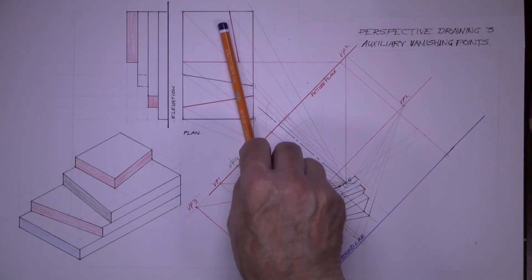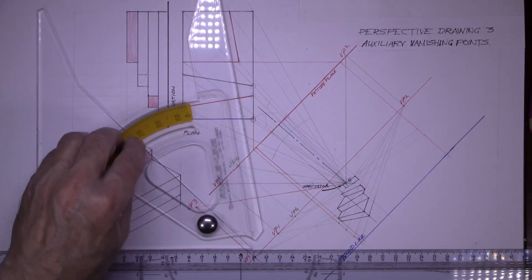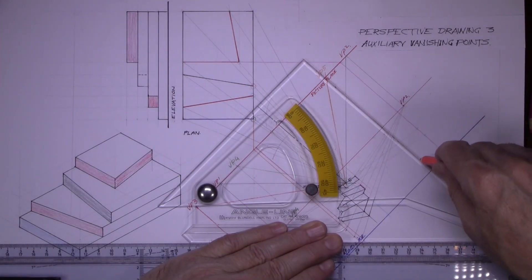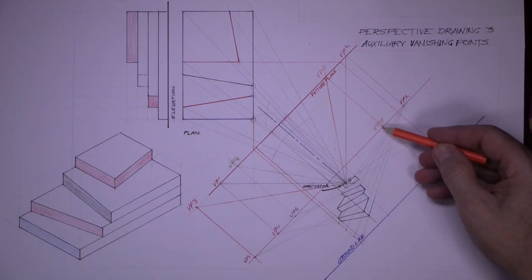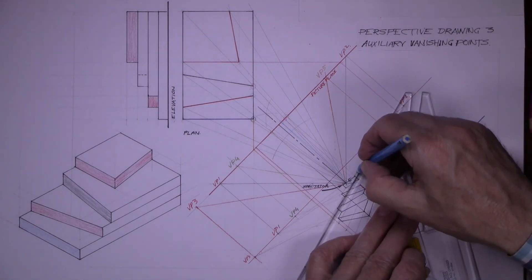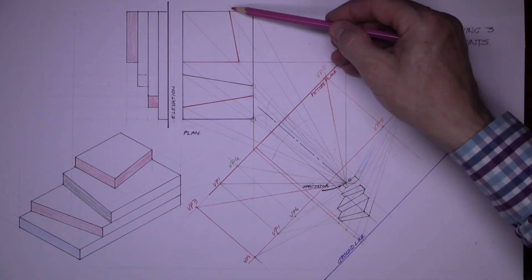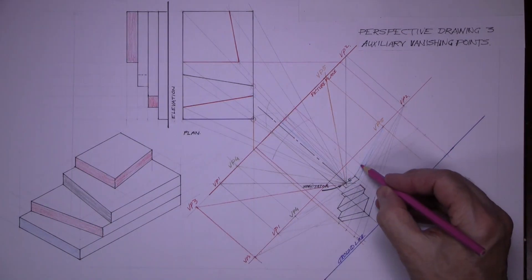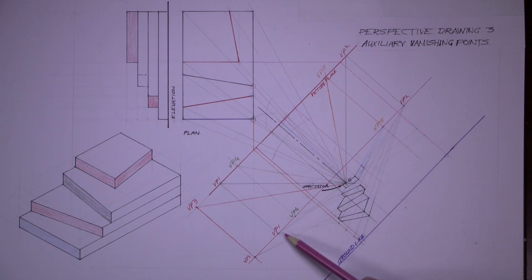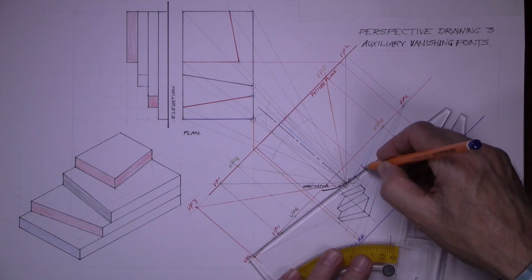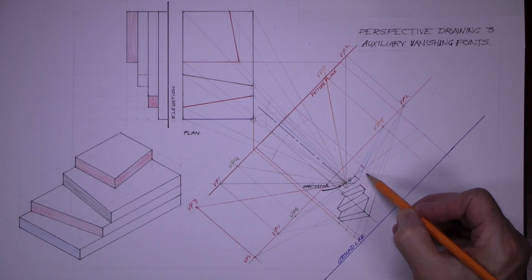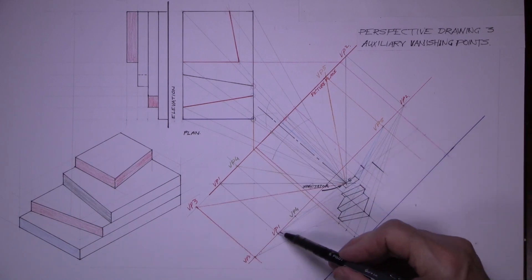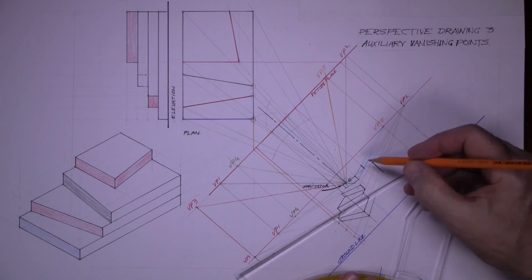This line's at another angle, so set the adjustable set square to that angle, and from the spectator draw up to hit the picture plane — that gets vanishing point 5. Bring it down to hit the horizon line and join vanishing point 5 to these two points here. This back point — bring it down to hit the picture plane and on down — and that gets that line at the back. From vanishing point 1, vanish through that point, and where that line cuts that line, that gets the end of the piece. Line in that.